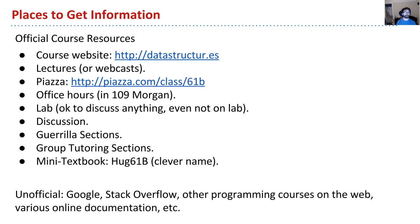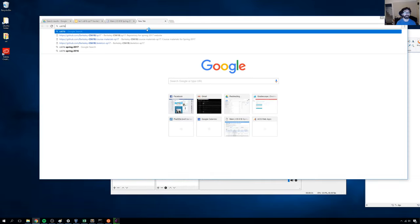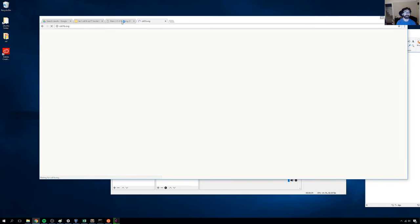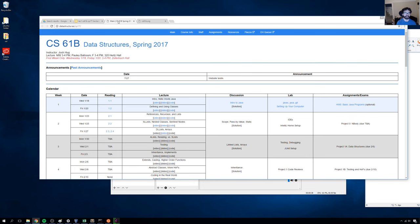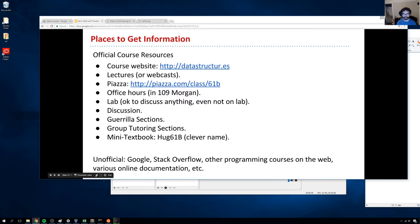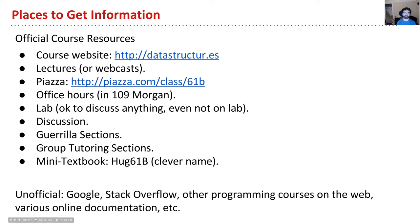Course logistics: first of all, we have a bunch of different places to get information. We have the course website, which is data structures — very clever. We would have done CS61B.org, keeping with tradition, but somebody sniped it, and it's available for sale. But I will never reward domain snipers. That's going to be the main place for everything, and I encourage you to go there. We will also have lectures, webcasts for the live lecture each semester.